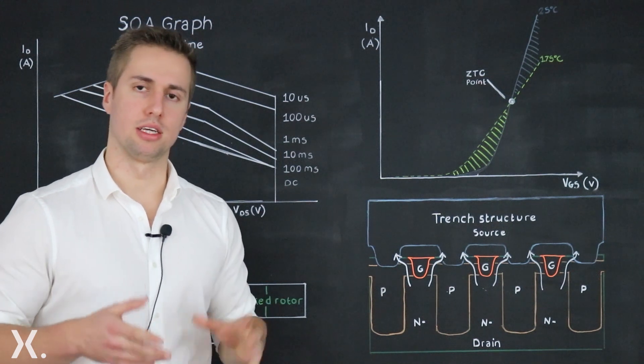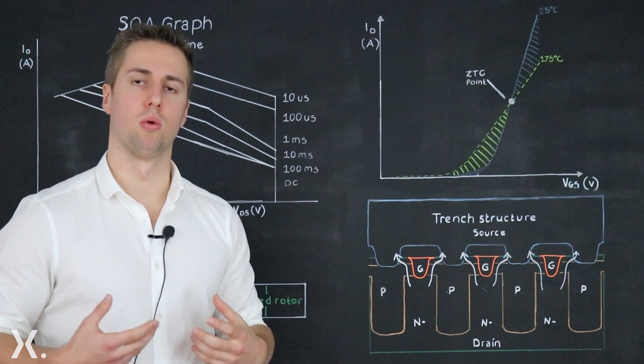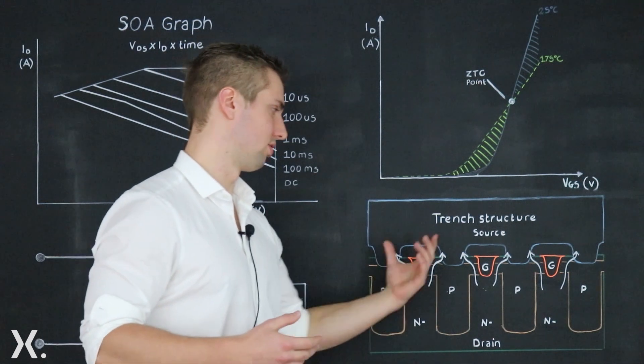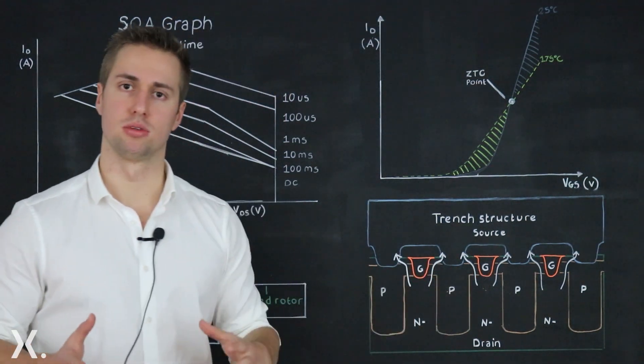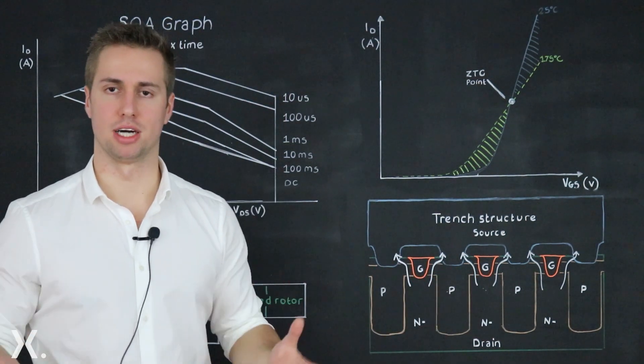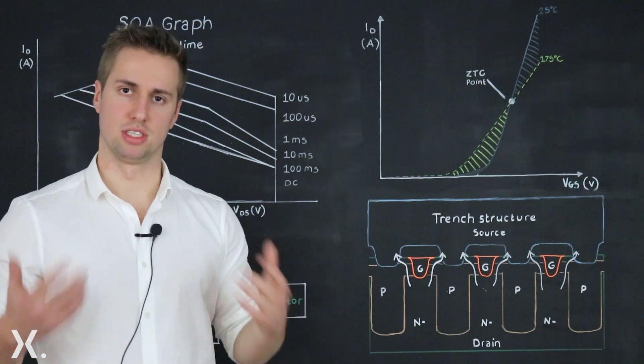Now on the other hand if you want low RDS on what you want to do is put more of these trenches in parallel which, as with resistors, more in parallel means that overall resistance reduces.